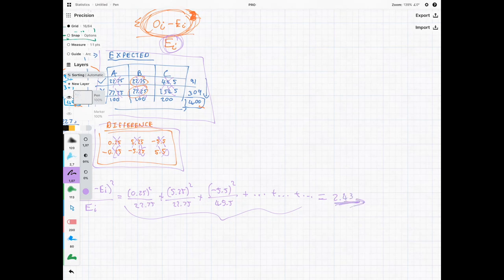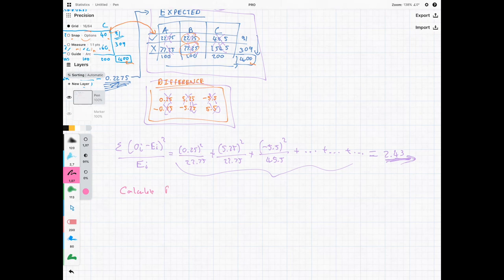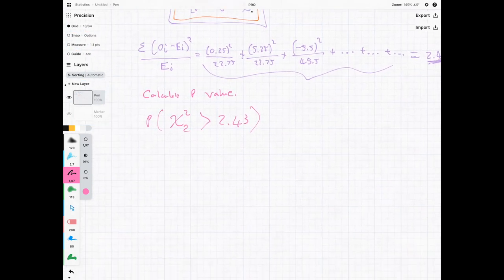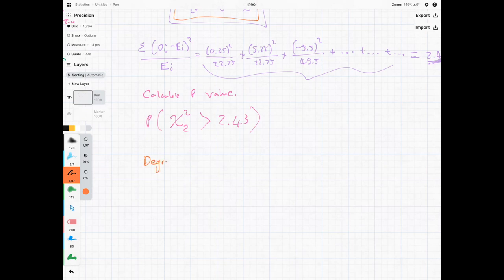We like this value, we're going to be using this value now to calculate our p-value. So how do we calculate our p-value? We're going to have the probability that our test statistic is greater than 2.43. But in order to do this we need to assign a degree of freedom because there's a whole bunch of chi-square distributions. The degrees of freedom is 2. I'm going to tell you - should I tell you now? Let me tell you now. How do I get 2? If we want to do degrees of freedom with contingency tables we have the following formula.